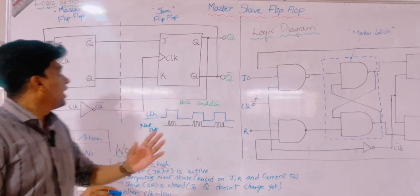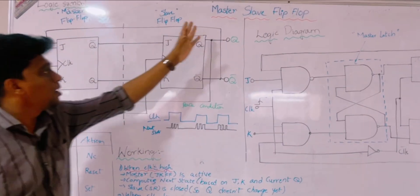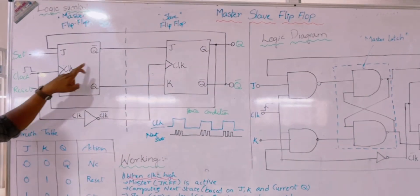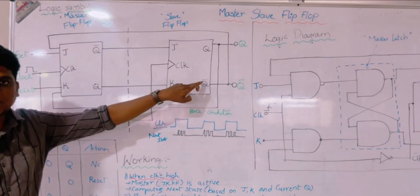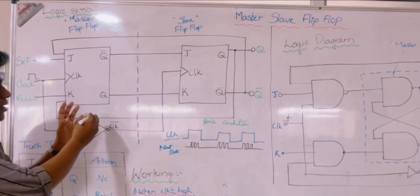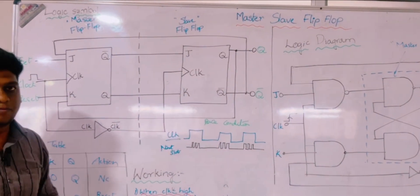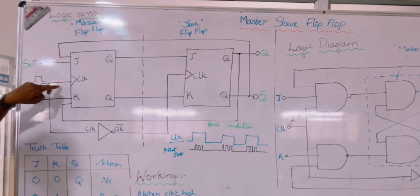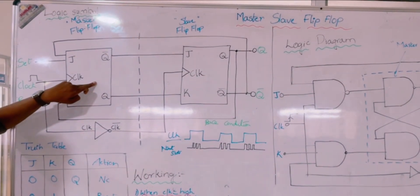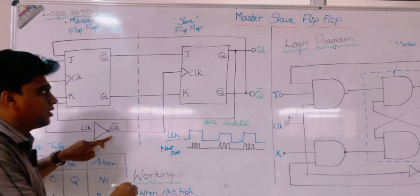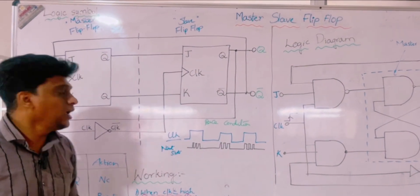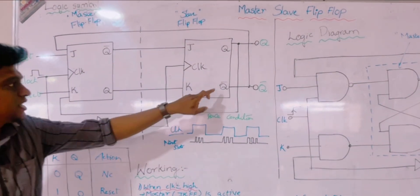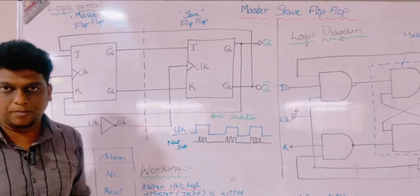This racing condition can be eliminated by using the master-slave flip-flop. In this master-slave flip-flop, we are using two flip-flops — one is the master and another one is the slave. The output of the master flip-flop is given as input to the slave flip-flop. The clock pulse is provided to the master flip-flop and the inverted clock pulse is given to the slave flip-flop. The master flip-flop is a positive edge-trigger flip-flop and the slave flip-flop is a negative edge-trigger flip-flop.